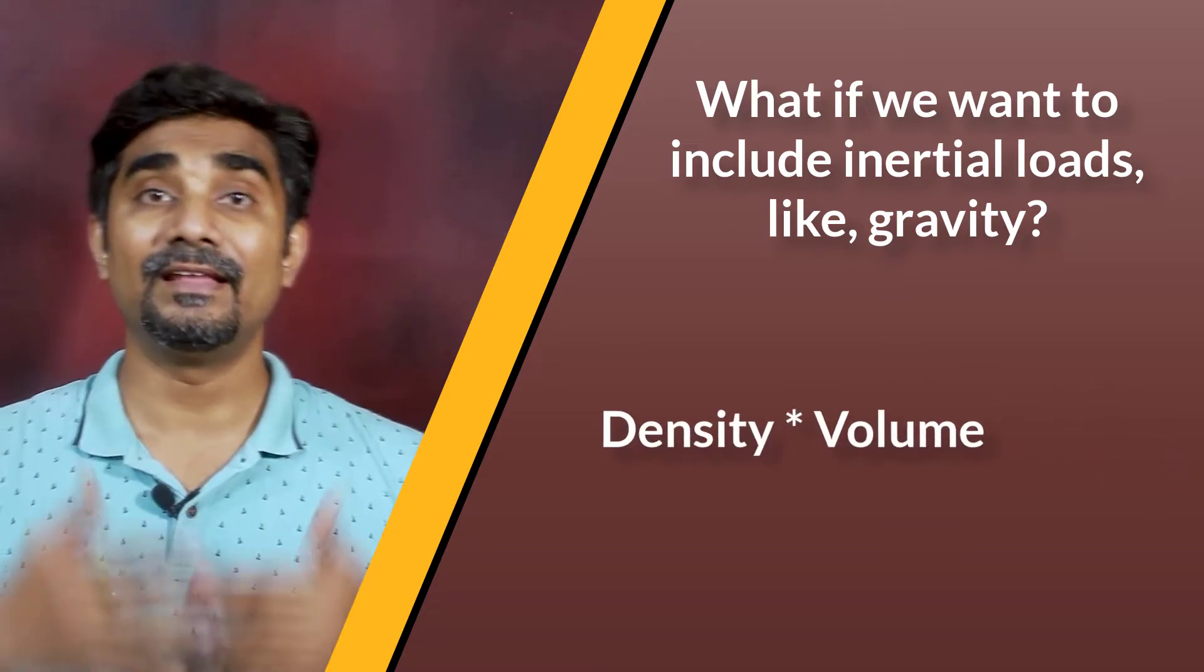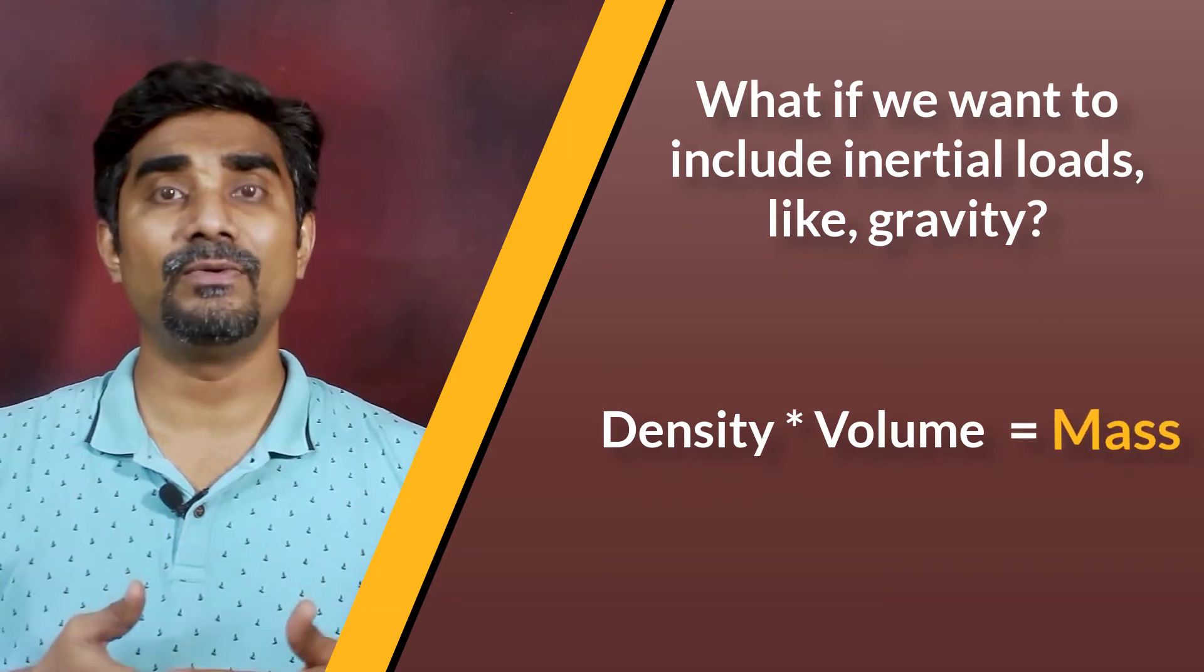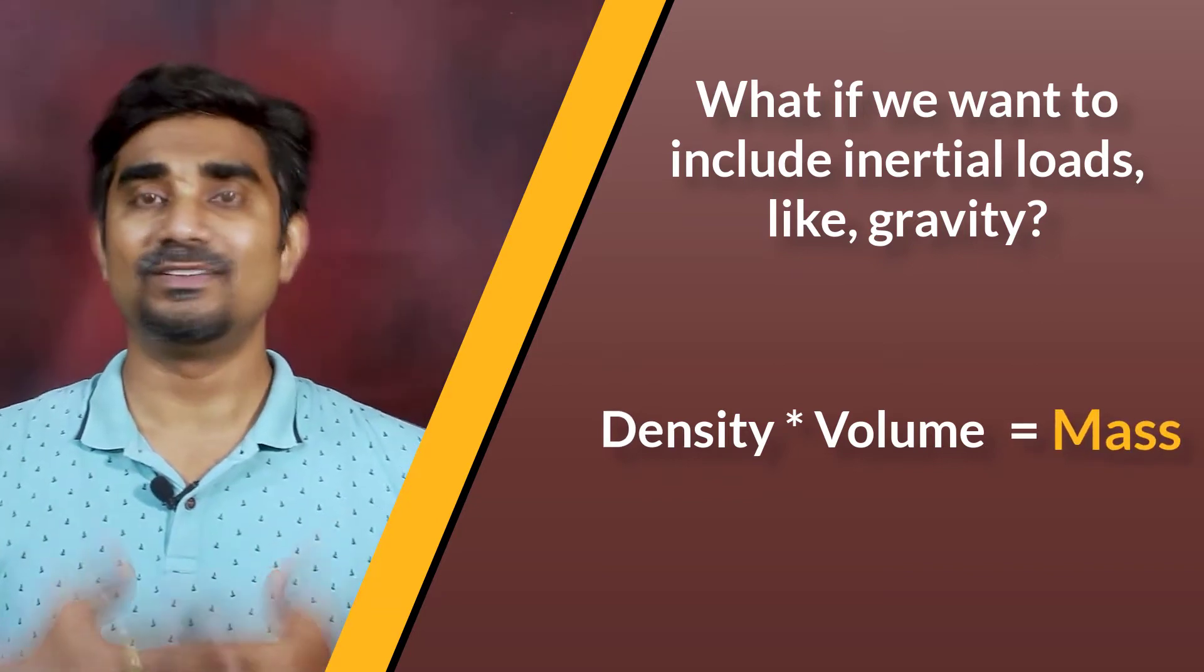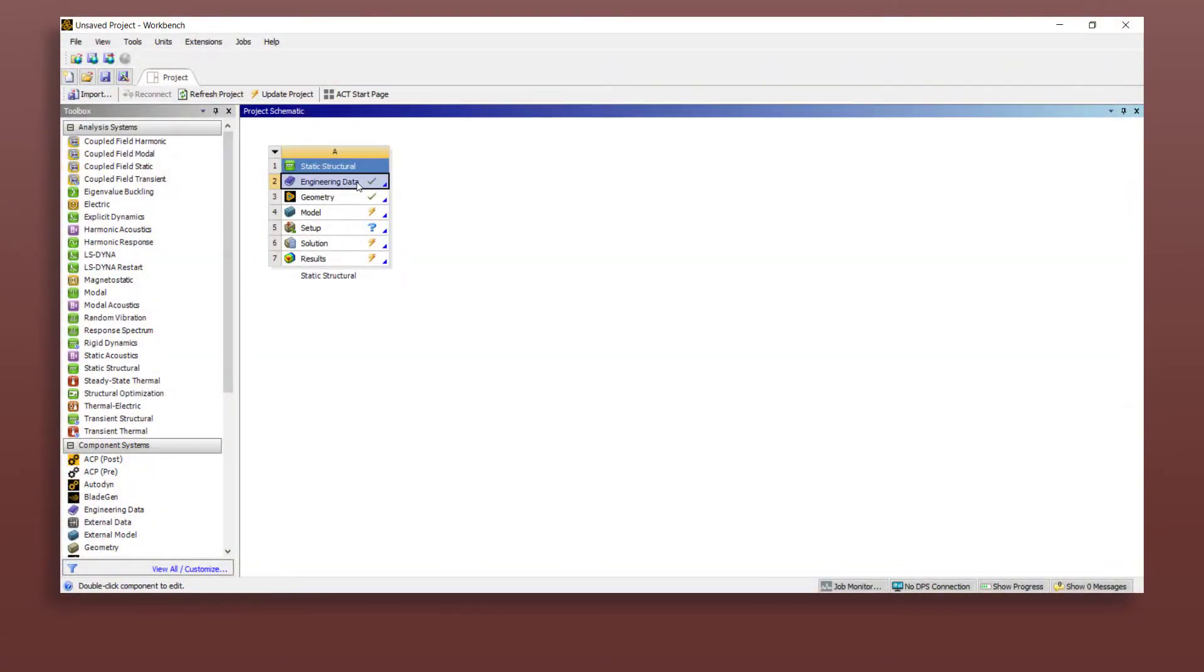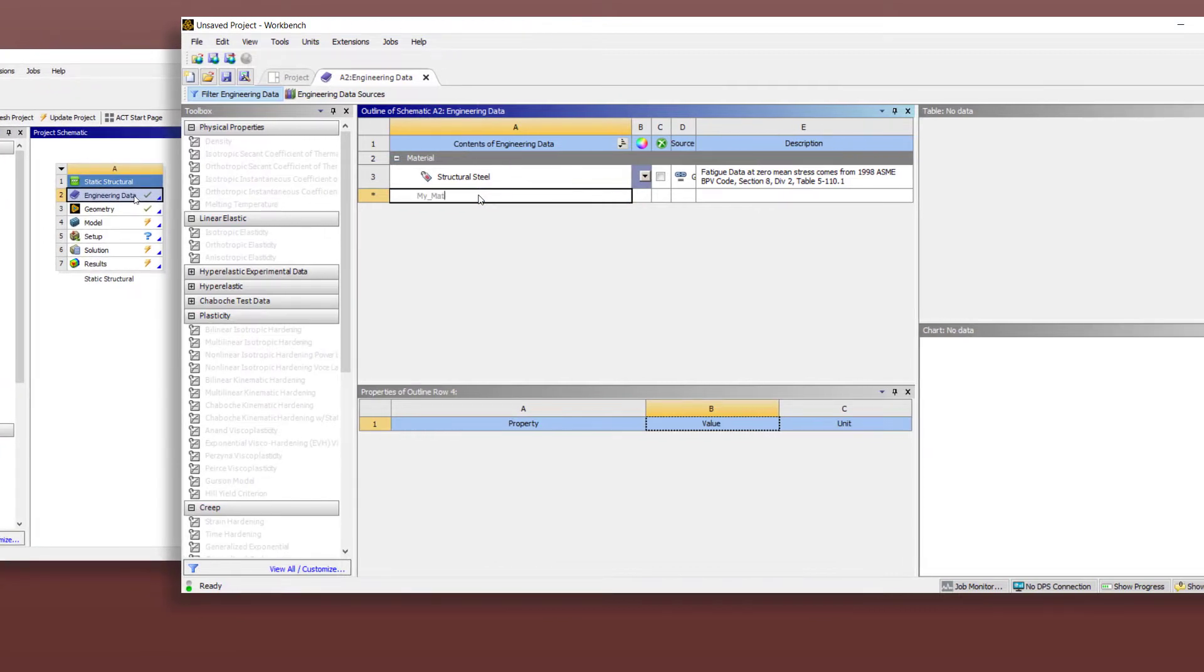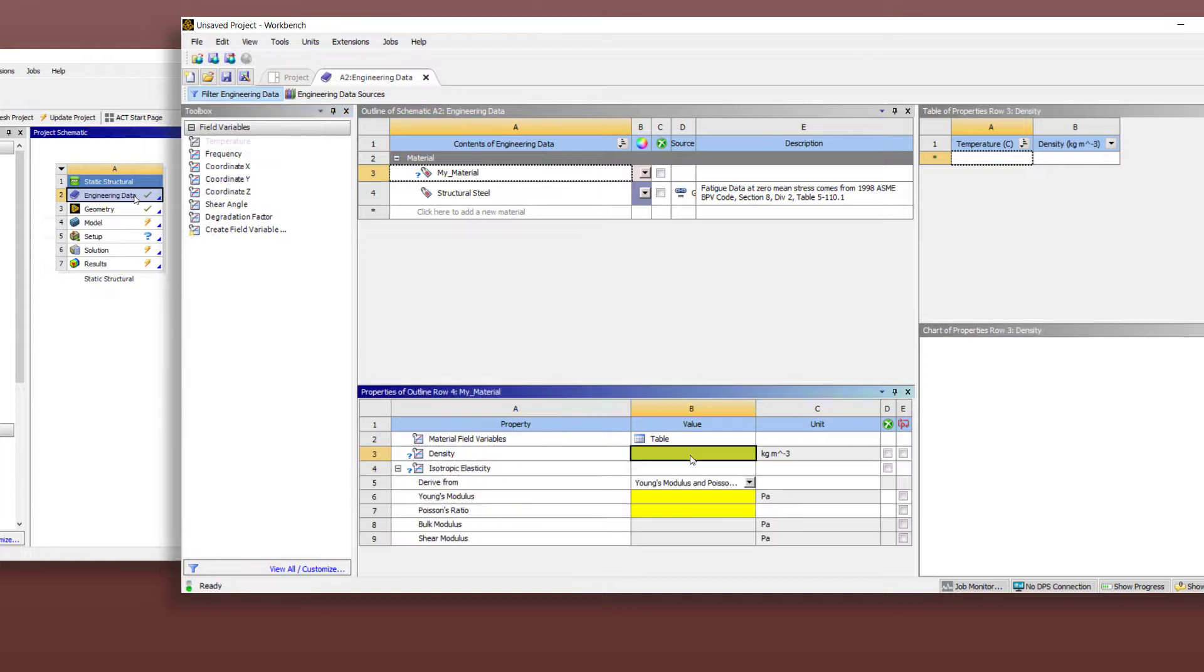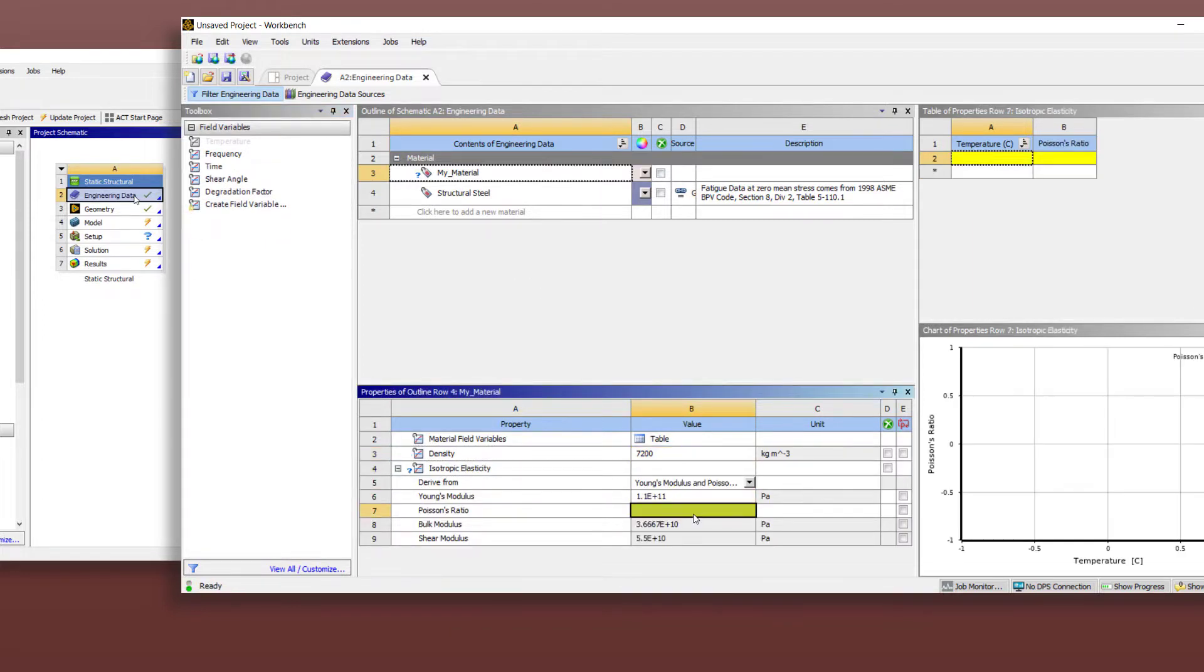With density and having the geometry that provides the volume, we can derive the mass of the bodies for inertial loads. Here is a process to create a new material and add the material parameters. First, add the material in the list and then drag and drop the required parameters on the material and specify the values along with correct units.